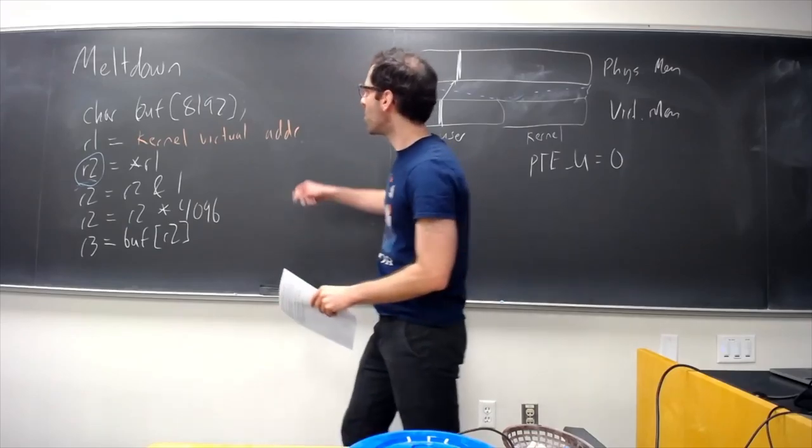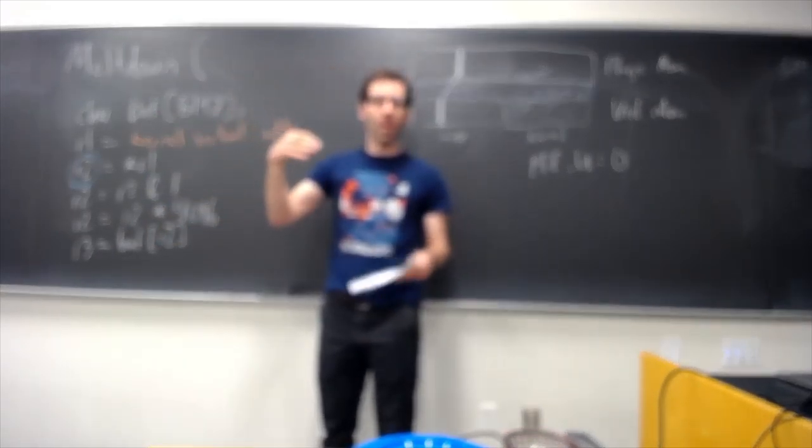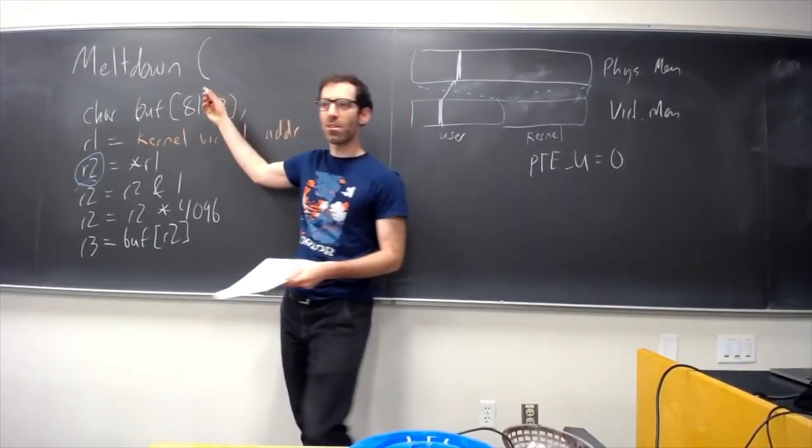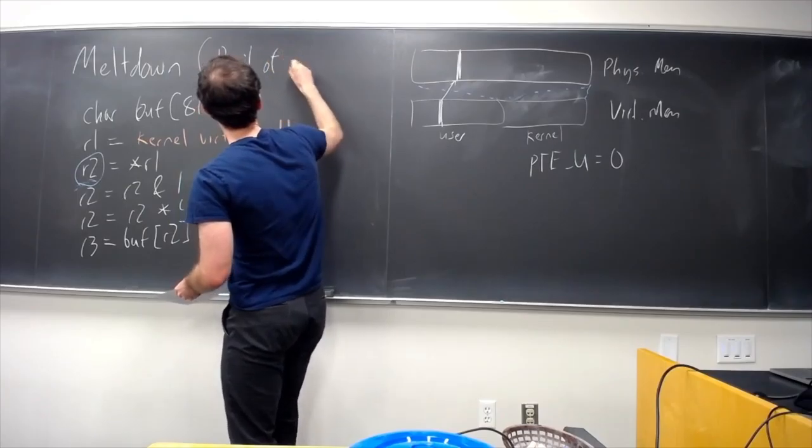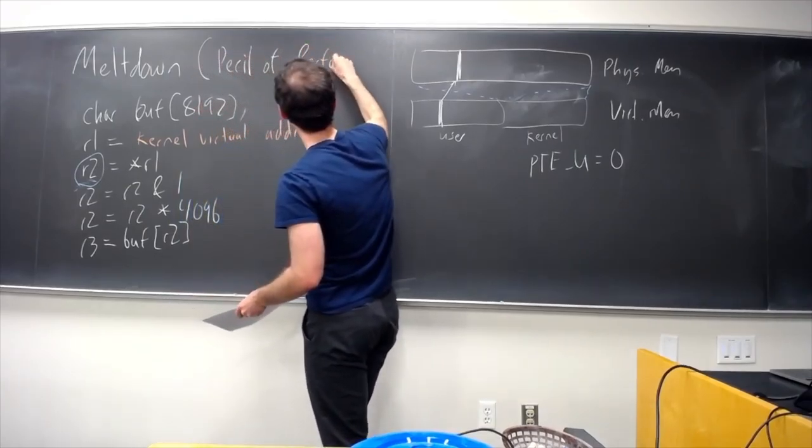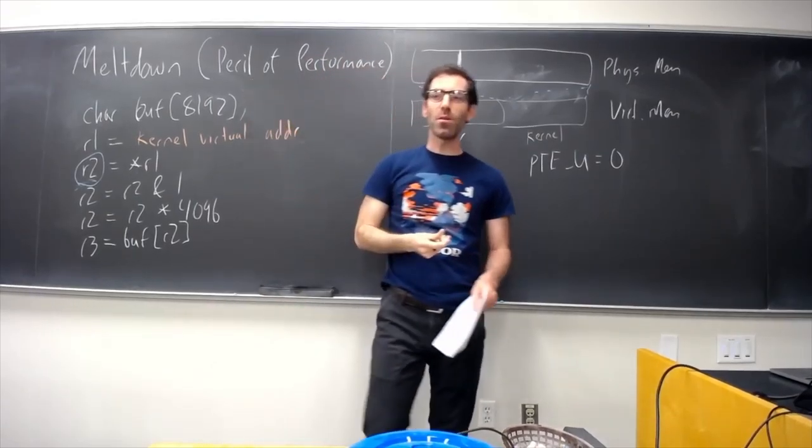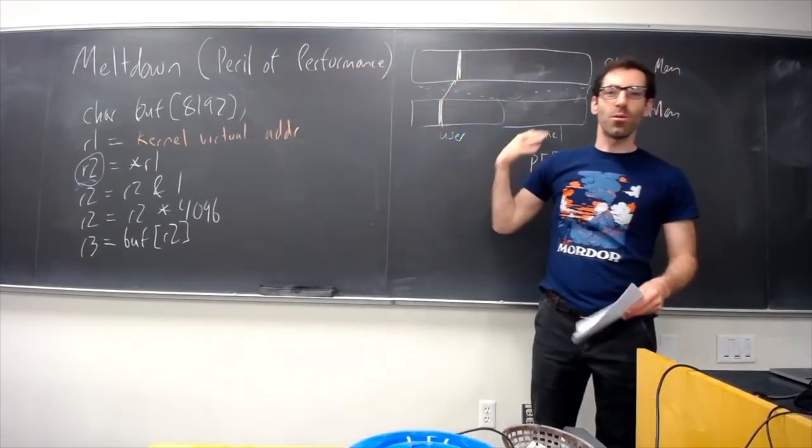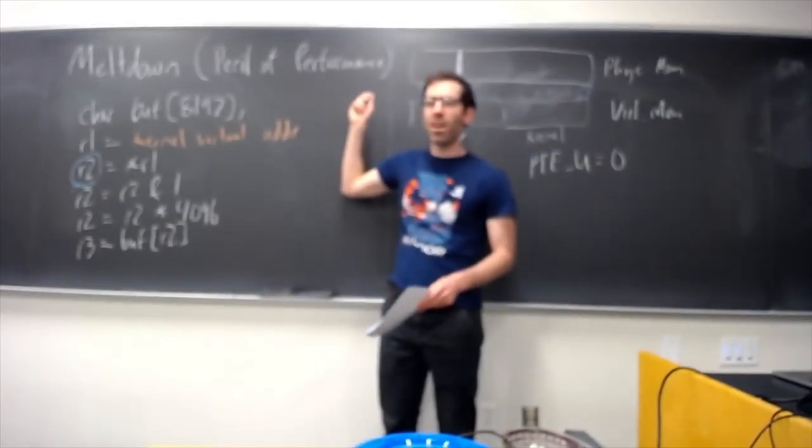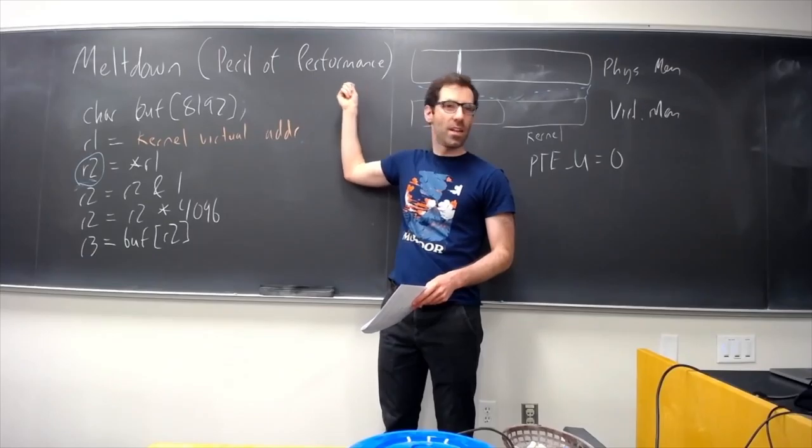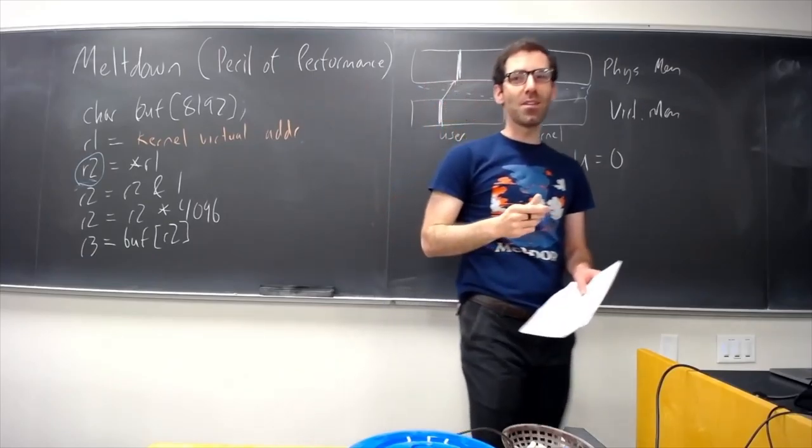And so, sort of, a sub-theme to all the sort of contingent factors that led up to this vulnerability is the peril of performance. But, there were all these decisions that were made that were like, this seems fine. And, it's going to give us better performance. So, let's do it. Things were not fine in the end.